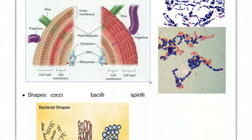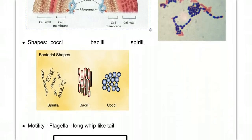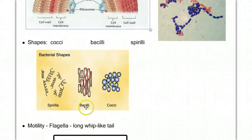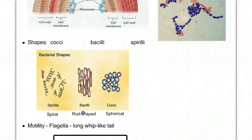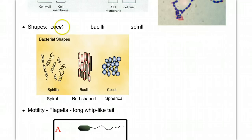Another way to differentiate bacteria is by their basic shape. There are three basic bacterial shapes: spirilli (spiral), bacilli (rod-shaped), and cocci (spherical). These names — spirilli, bacilli, and cocci — are often built into the scientific name for that bacterium. You'll need to be able to match these terms with these shapes both by sight and by name.